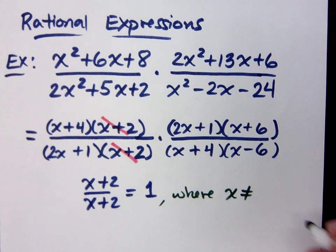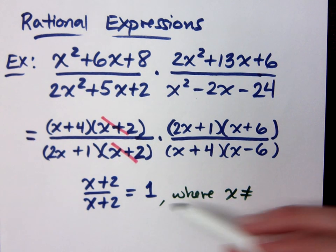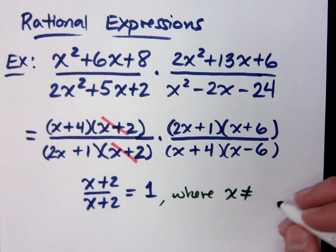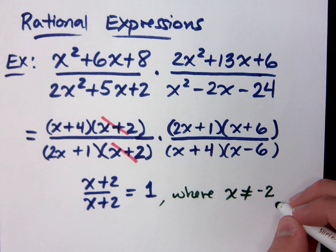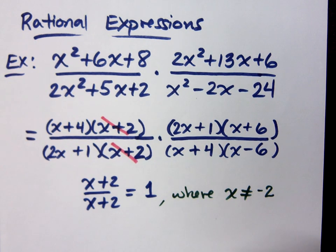0. No, if x is 0, I get 2 over 2, which equals 1. Who's the bad guy? Oh, negative 2. We talked about restricted values before, right?